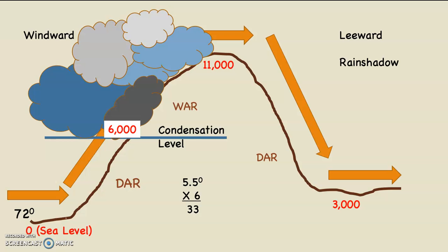So we subtract 72, which was the given at sea level — that was what the air mass started at. 72 minus 33 is 39. This tells us that the air temperature at the condensation level at 6,000 feet is 39 degrees.